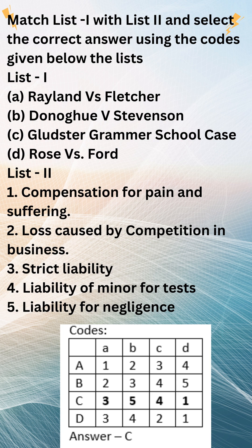The Gladstead Grammar School case established that minors are liable for negligence in tort cases. However, the courts will take into account the age and maturity of the minor when deciding whether to award damages. Rose v. Ford established that minors are liable for the consequences of their own tortious acts; however, the courts will take into account the age and maturity of the minor when deciding the amount of damages to award.